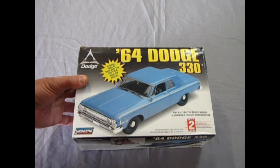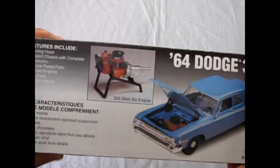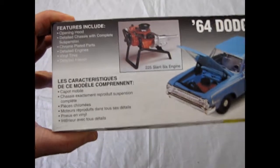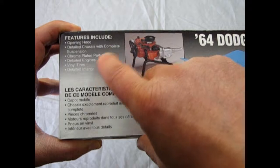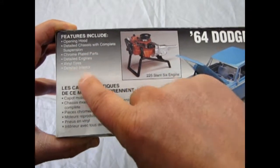It's a skill level 2 so you need your glue and paints. It's more challenging. So looking at the side of the box here, it says opening hood, detailed chassis with complete suspension, chrome plated parts, detailed engine, vinyl tires, and a detailed interior.